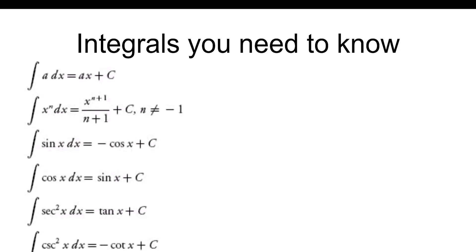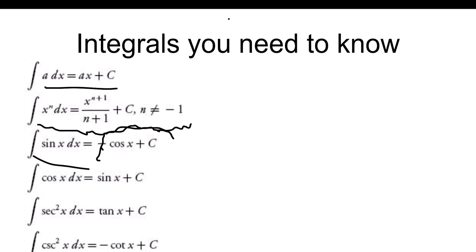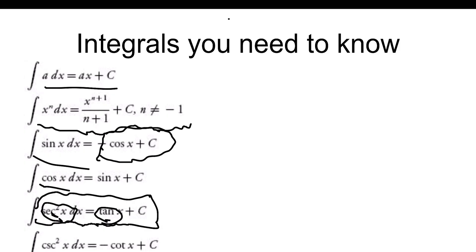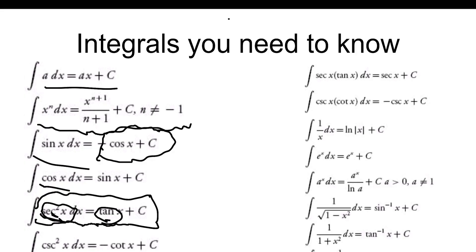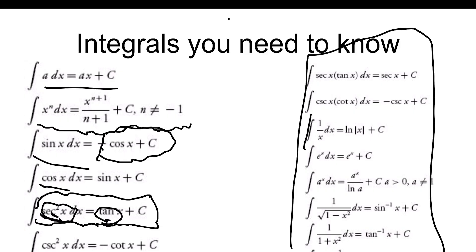You have some key integrals to know. The integral of a constant a dx is ax + c. The power rule for integrals: the integral of x^n dx is x^(n+1)/(n+1) + c. You should know the integrals of sine, cosine, and secant squared of x (which gives tangent). Also know the integral of cosecant squared of x. And the integral of 1/x dx is the natural log of the absolute value of x plus c — many people write ln(x) and forget the absolute value.